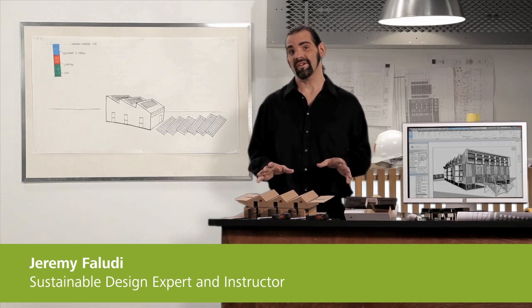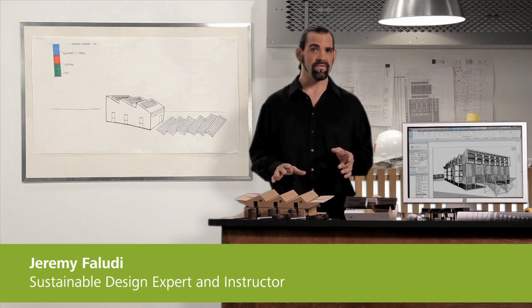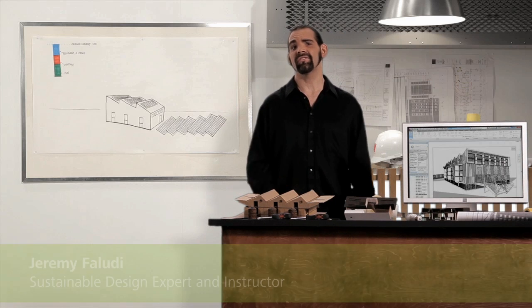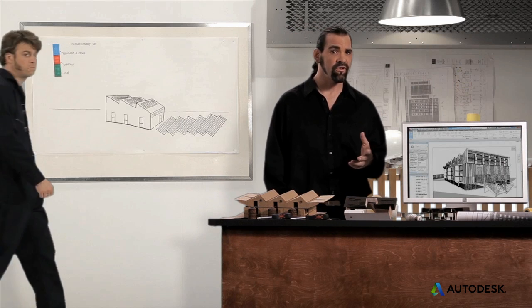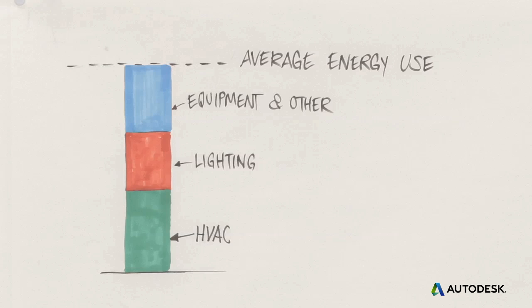The first step to affordably producing as much energy as your building consumes is lowering the amount of energy it takes to keep your building comfortable. Maintaining the right interior temperature, humidity and air quality often accounts for 30% or more of a building's energy use. But you can do this passively without demanding purchased energy at all.